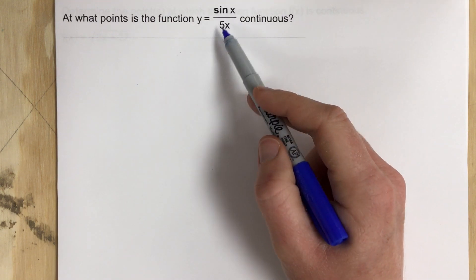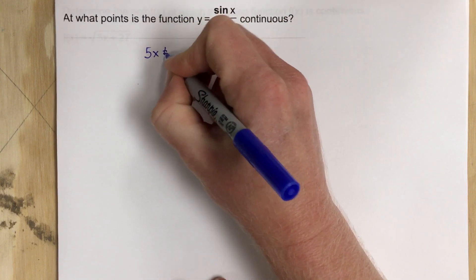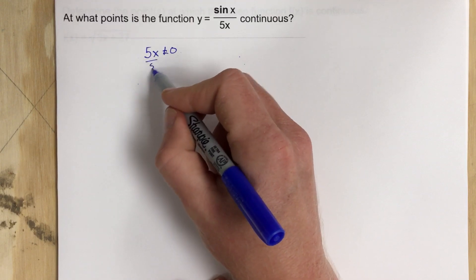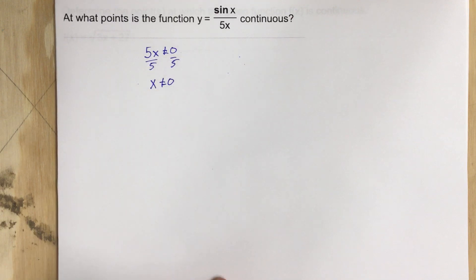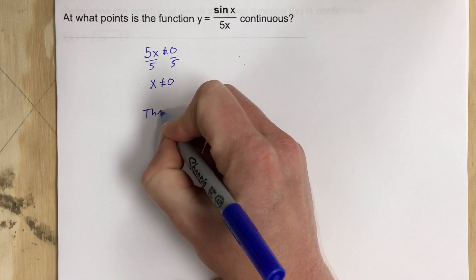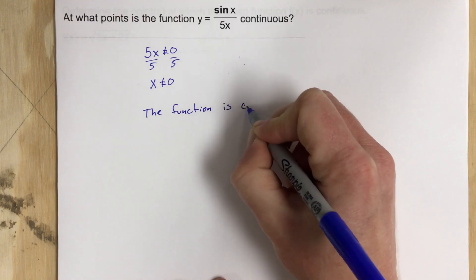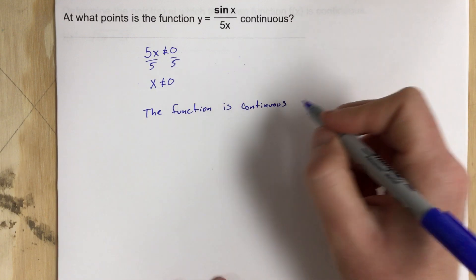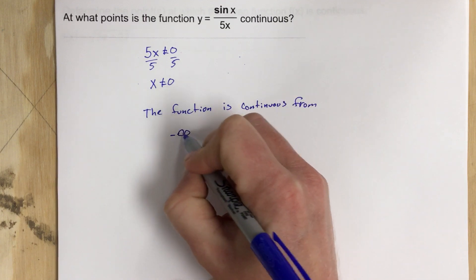We should find where it's discontinuous, and we have a rational function. So in order to find where it's discontinuous, we set the denominator not equal to 0 and solve. So we're going to divide by 5 on each side. And when we divide by 5, we get x cannot equal 0. Meaning the function is continuous from negative infinity to 0,